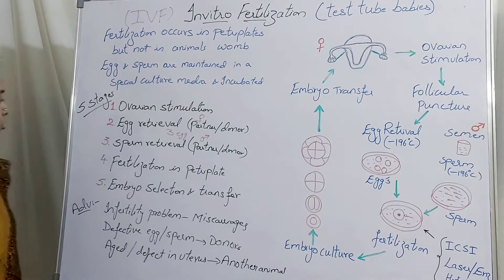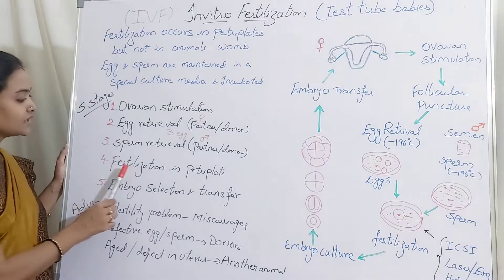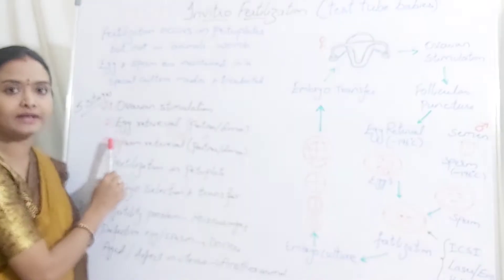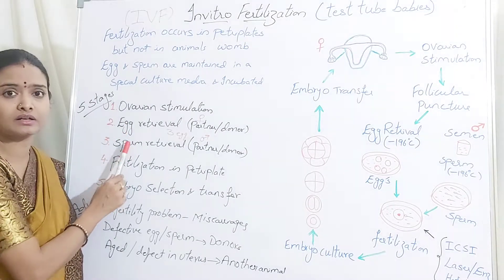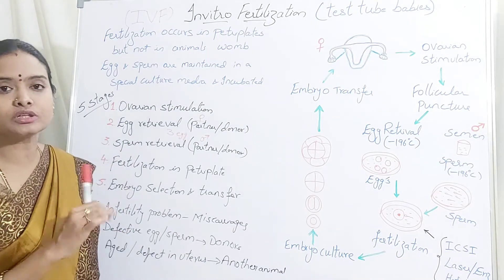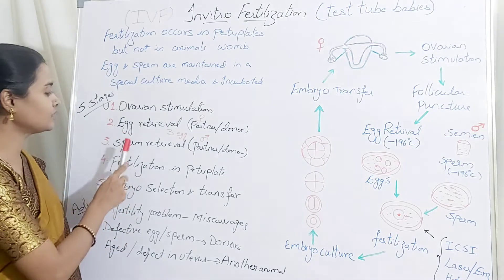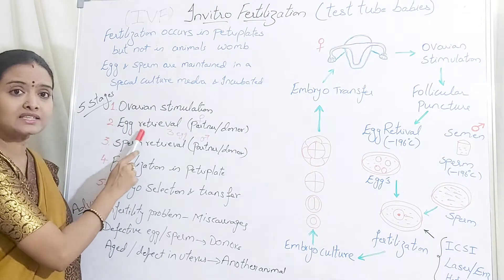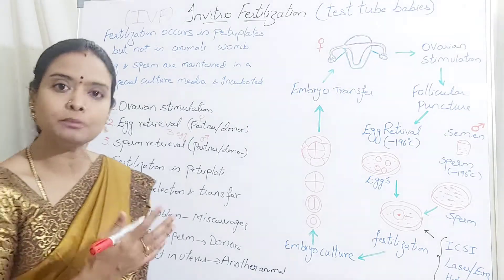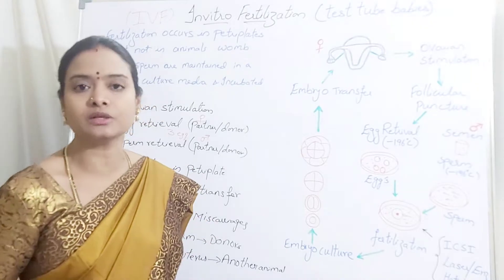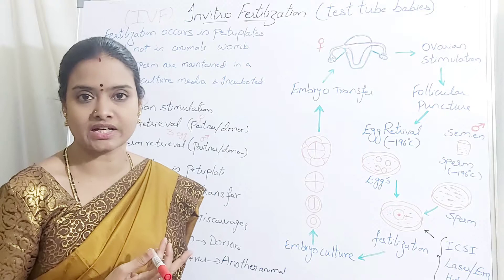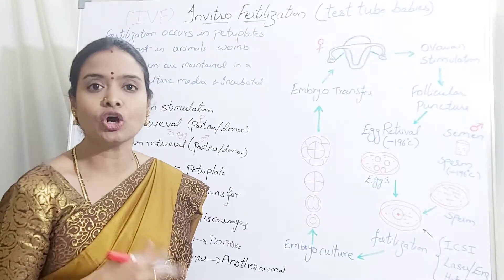In the fourth step it is fertilization in petri plate. Both the egg and sperm have been retrieved. Both gametes are maintained in nutritive media — animal tissue culture media. During egg retrieval you retrieve the oocytes which are immature, then for two days you maintain them in nutritive media such that they become mature oocytes after meiotic division.